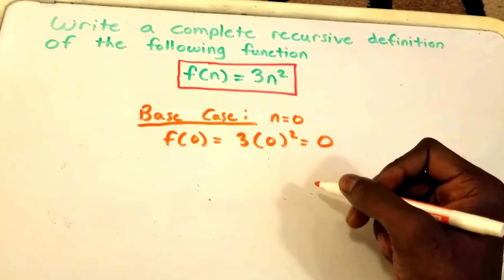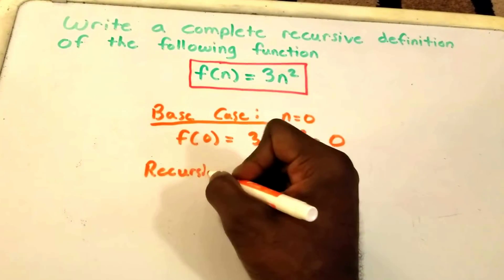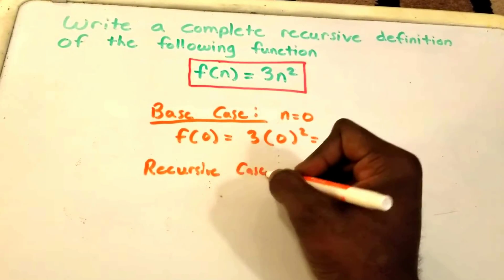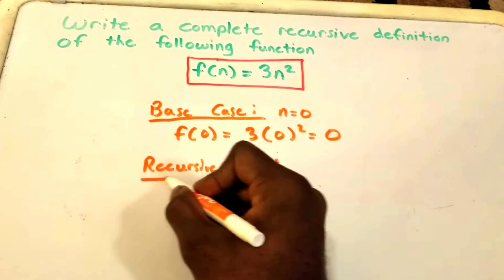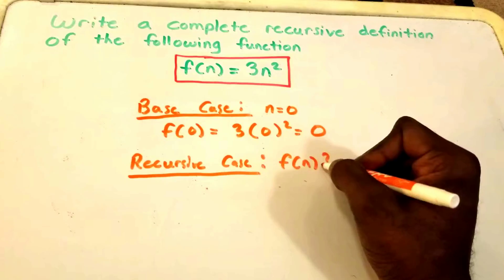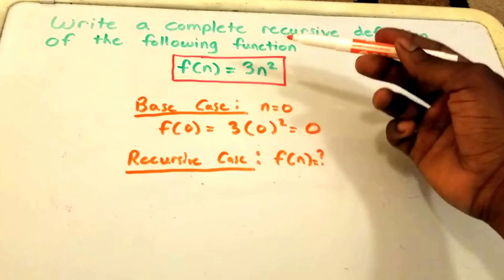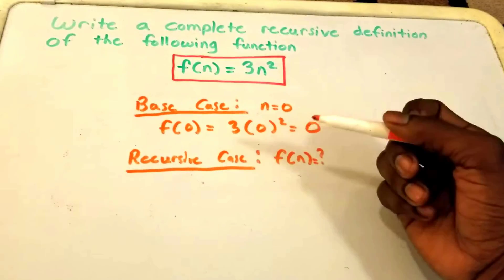And now we need to find our recursive case. So this is our f(n), what does that equal? Well of course it equals 3n squared, but we want the recursive case for it.